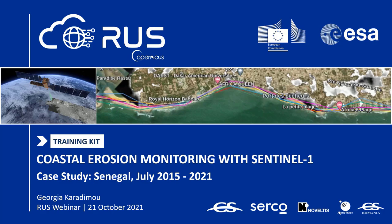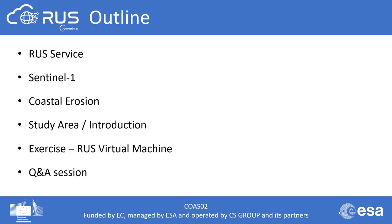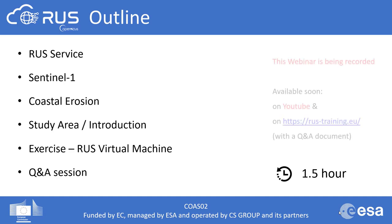Let's start by having a look at the structure of this webinar. We will first have a quick introduction about the RUSS service, what the project is about, followed by some updates. We will talk a bit about the Sentinel-1 satellite and its data, followed by a short introduction about the study area and some theory about coastal erosion, and then we will move to the exercise in the RUSS virtual machine. Finally, a Q&A session will follow at the end. The webinar will last around 1 to 1.5 hours, including both the demonstration part and the Q&A session. This webinar is being recorded and you will be able to repeat the exercise yourself once it is uploaded to our YouTube channel and training website.